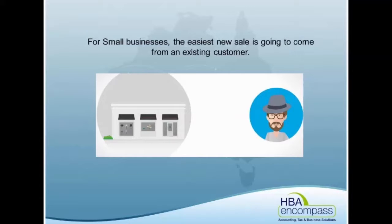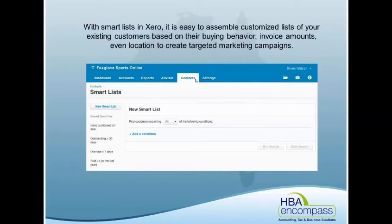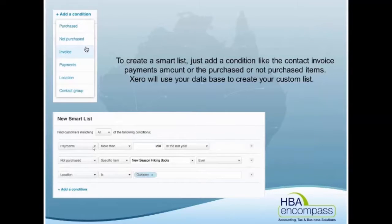If you have another CRM system, then you probably wouldn't bother with this, but it's just something that Xero does have. Under your contacts, there's a button called Smart Lists. Xero has some standard ones that cover customers who have purchased, have outstanding fees, or have actually bought from you in the last year. But the ability is here in these conditions to target it for whatever you want from your customers — just a matter of clicking down and adding a condition.